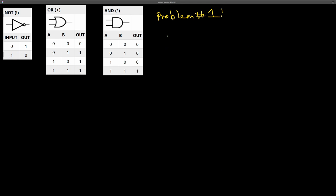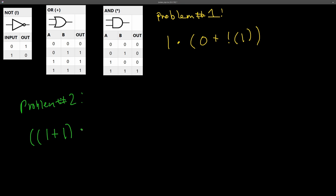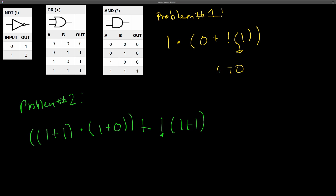Try to pause the video and work these on your own. For problem one: NOT of one is zero, then zero OR zero is zero. Bring down the one, and one AND zero is zero — that is the final answer.